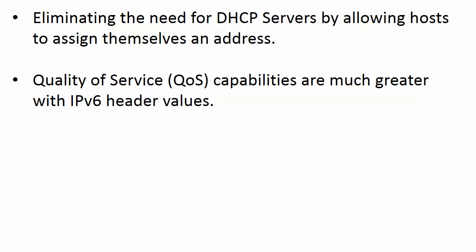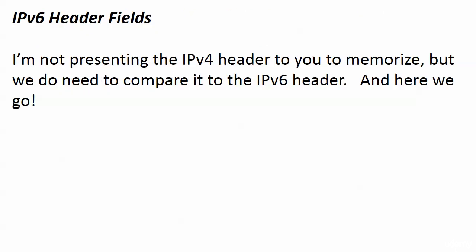With version 6, we have the opportunity to eliminate the need for DHCP servers because hosts can assign themselves an address. Also, quality of service - QoS - is a great way to classify traffic so you can treat different classes differently, give one transmission priority over another, and say don't drop this kind of traffic, drop this one instead. The capabilities of QoS are much greater with version 6 header values.